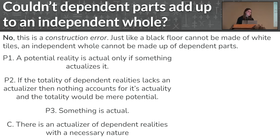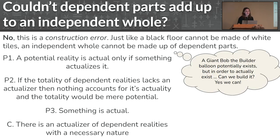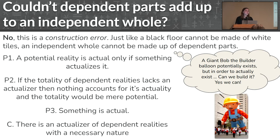Which means that there is an actualizer somewhere of dependent realities with a necessary nature. This is sometimes called the unmoved mover argument, or the uncaused cause argument, if you're interested in looking into that more thoroughly. So kind of another way to frame it. If a giant Bob the Builder balloon potentially exists, we can only build it if there's an actualizer to bring it into existence. And that's true for all dependent things, including us, including matter, if matter is a dependent thing.